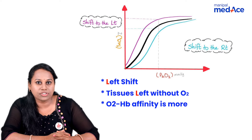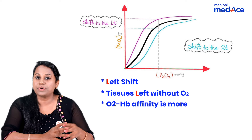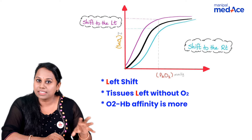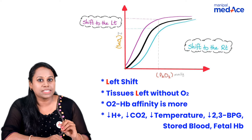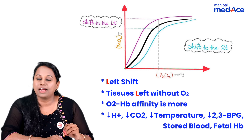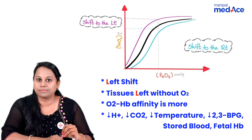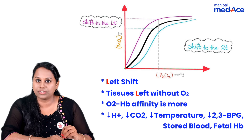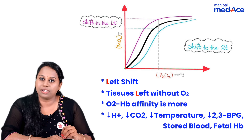What are the other factors which can cause left shift? Left means something negative, so we will place all decreasing factors: decrease in H+, decrease in CO2, decrease in temperature, and decrease in 2,3-BPG. Stored blood can cause decrease in 2,3-BPG, so stored blood also causes left shift.